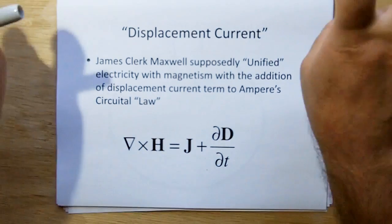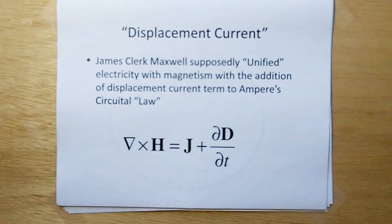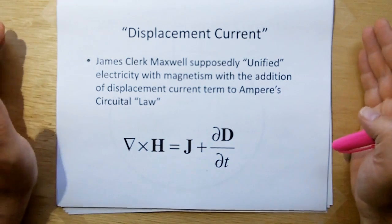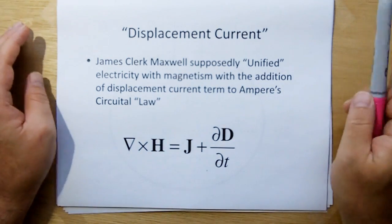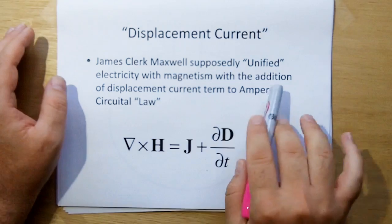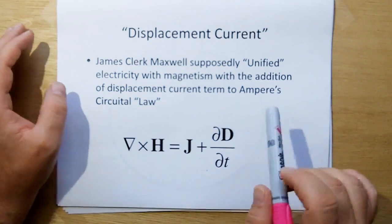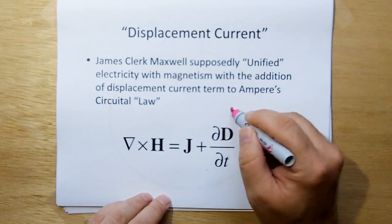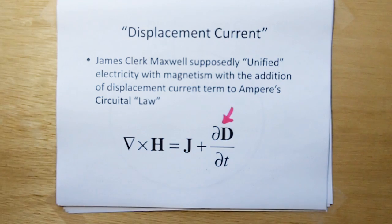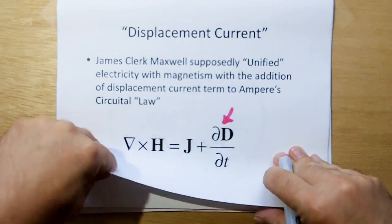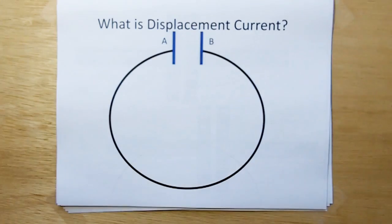So again, displacement current, that's just the term that Maxwell gave for the capacitive coupling across the capacitor in his thought experiment which I'm going to show next. And through this Maxwell supposedly unified electricity magnetism in the addition of the displacement current term, which is really just a euphemism for capacitive coupling or changing flux line.